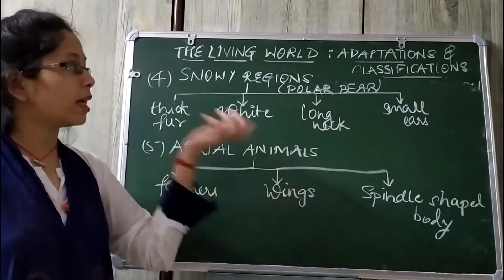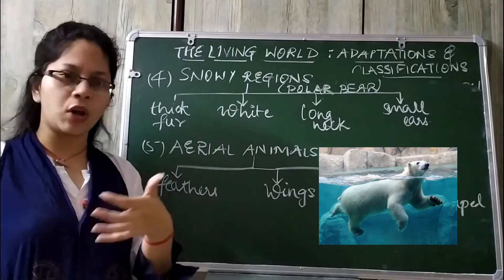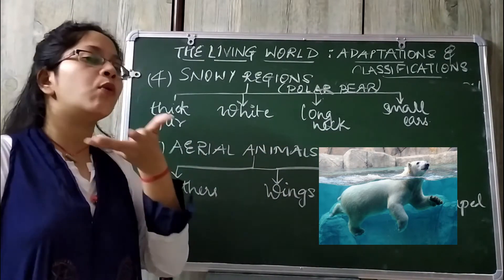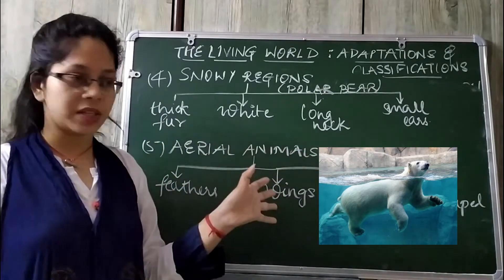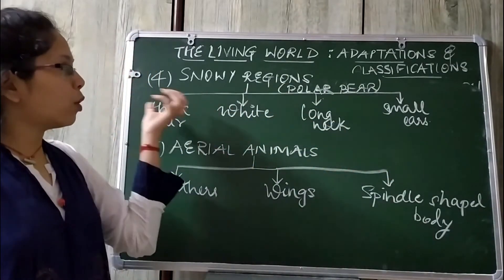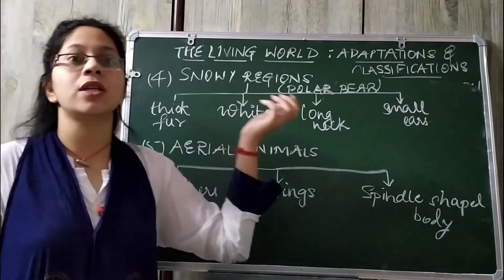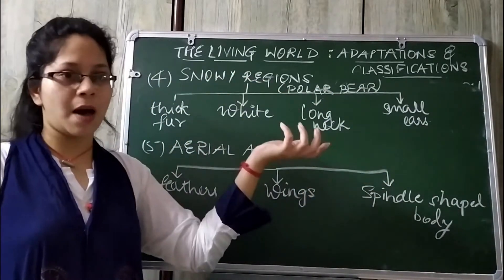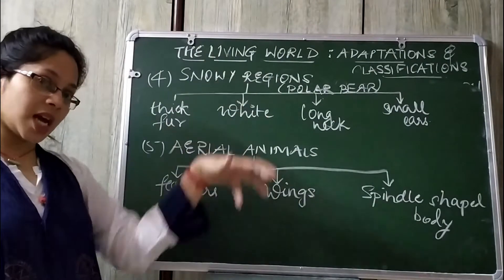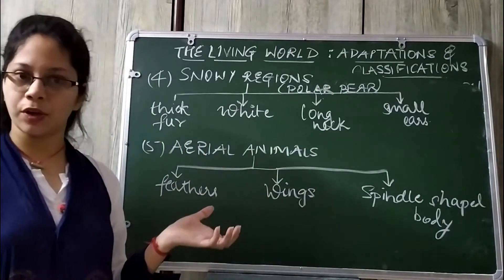The long neck helps them at the cold water surface. Here we took the example of a polar bear, but another animal in a snowy region may show one or two different adaptations — adaptations differ from animal to animal. Here we are studying in a general manner what mostly happens.